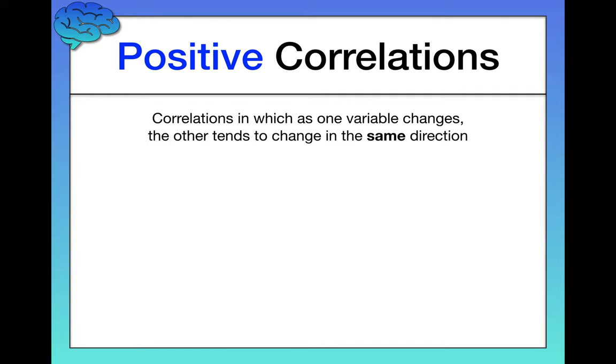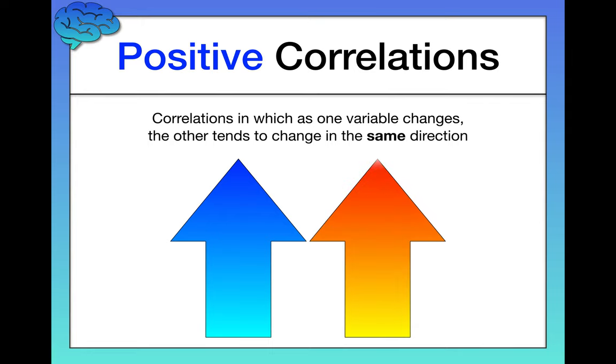Let's talk about each in turn, starting with positive correlations. A positive correlation is one in which as one variable changes, the other variable tends to change in the same direction. So the two variables are working together.